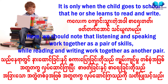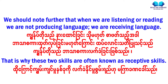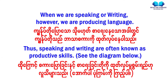By about four or five years of age, the child is able to use his or her mother tongue quite efficiently. It is only when the child goes to school that he or she learns to read and write. We should note that listening and speaking work together as a pair of skills, while reading and writing work together as another pair. When we are listening or reading, we are not producing language — we are receiving language. That is why these two skills are often known as receptive skills. When we are speaking or writing, however, we are producing language. Thus, speaking and writing are often known as productive skills.